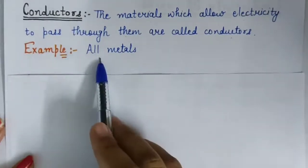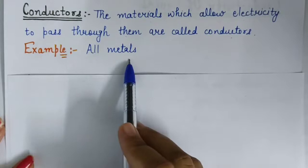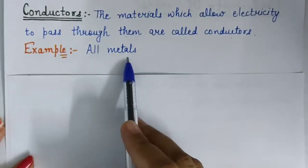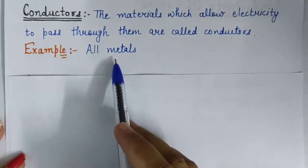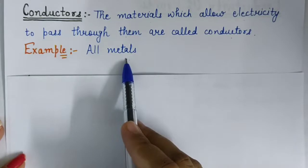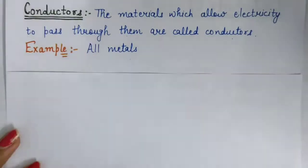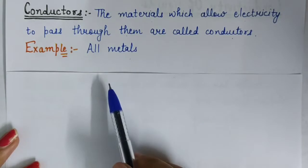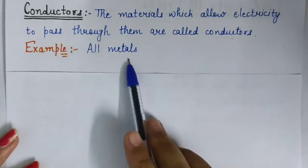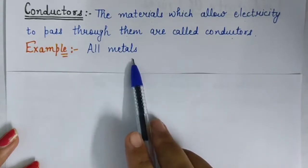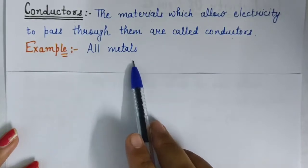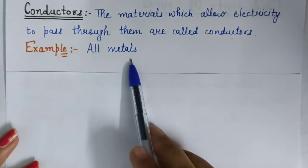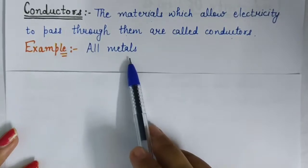For example, all metals are conductors, meaning electricity can pass through all metals. We know that electricity can pass through wires, and wires are made up of metals like aluminium and copper. So an electric wire is an example of a conductor. We can say that all metals are conductors.